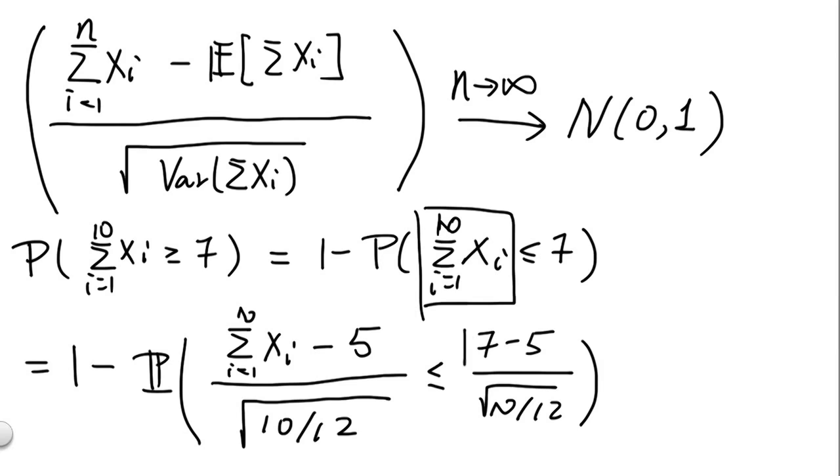Now if we compute out the quantity, we know that this quantity is roughly 2.19. And by the central limit theorem, if we believe 10 is a large enough number, then this will be roughly equal to 1 minus the CDF of a standard normal evaluated at 2.19. And we can look up the number in a table, and this gives us the number roughly 0.014.